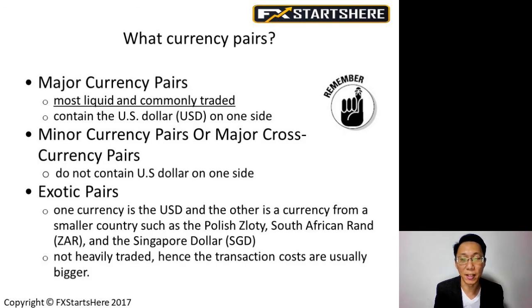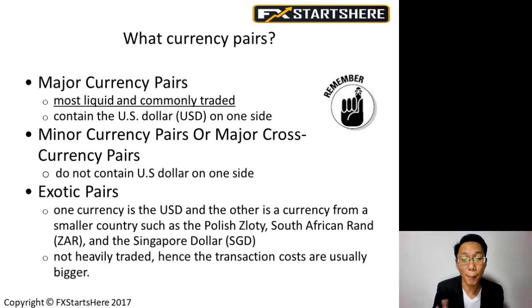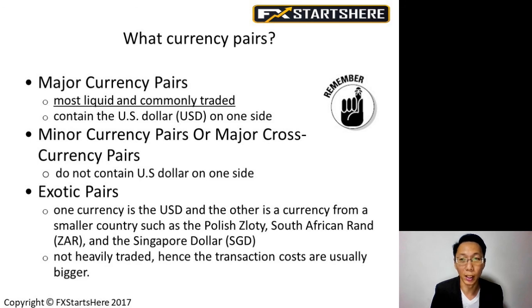What are currency pairs? There are three main groups of currency pairs. The first is the major currency pair. The second is the minor currency pairs, also known as the major cross-currency pair. And the third is called the exotic pairs. The major currency pairs are the most liquid and most commonly traded — they normally contain the U.S. dollar on one side. For example, U.S. dollar against Japanese yen, or euro against the U.S. dollar.